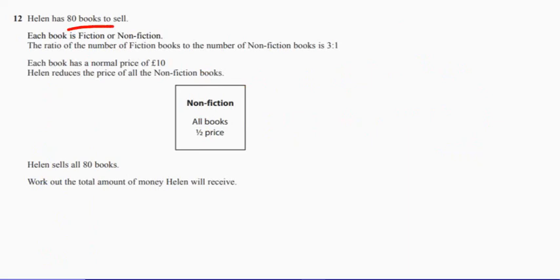Each book is either fiction or non-fiction. The ratio of fiction books to non-fiction books is three to one. So that means there's three times as many fiction books. I quite like writing this. So I've got fiction, non-fiction, and that's three to one.